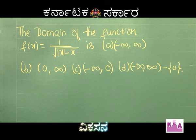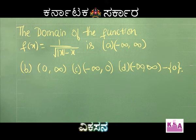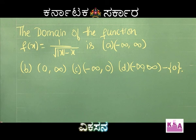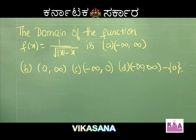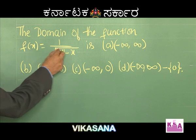The domain of the function f(x) = 1/√(|x| - x). Option A is minus infinity to plus infinity, option B is 0 to infinity, option C is minus infinity to 0, and option D is minus infinity to infinity minus 0. Look at this: the function is 1 divided by root of |x| minus x.